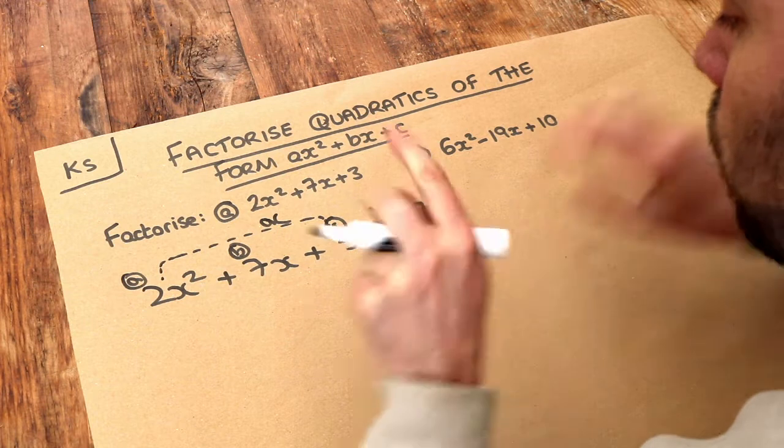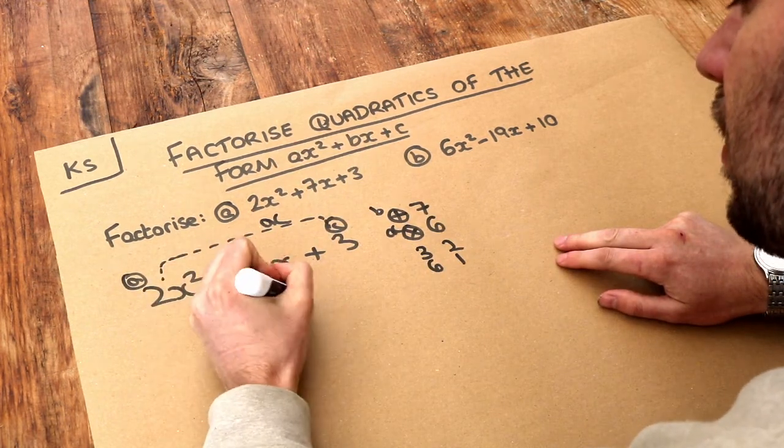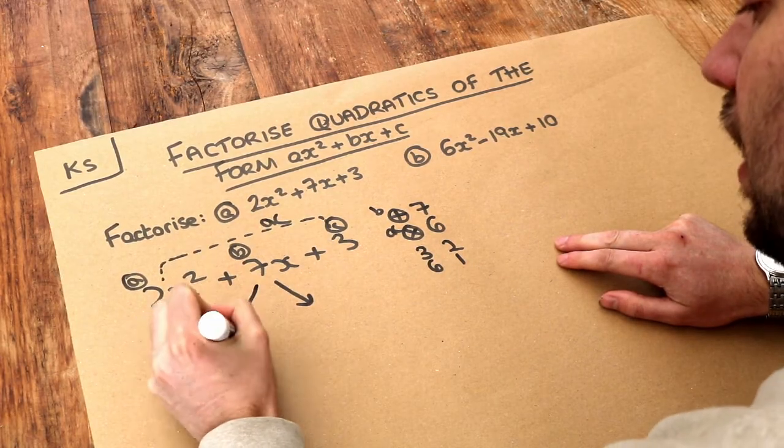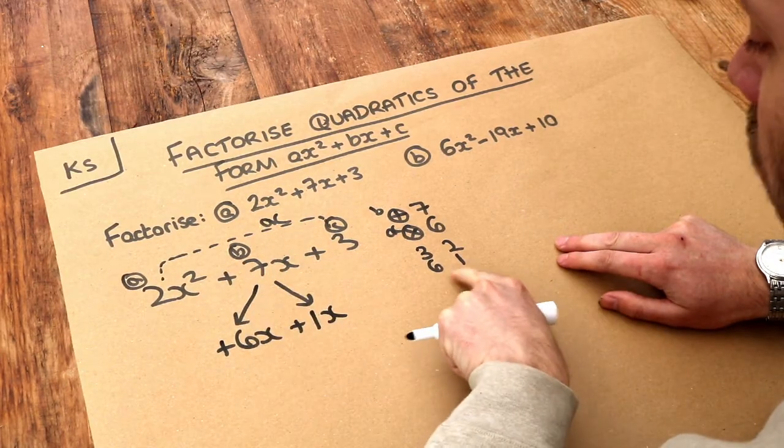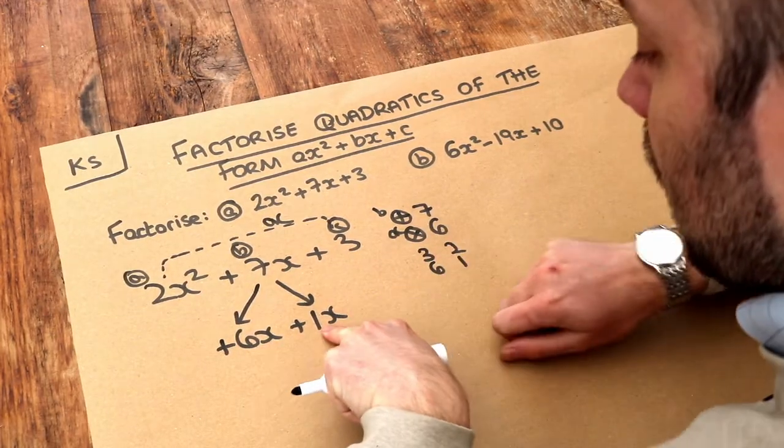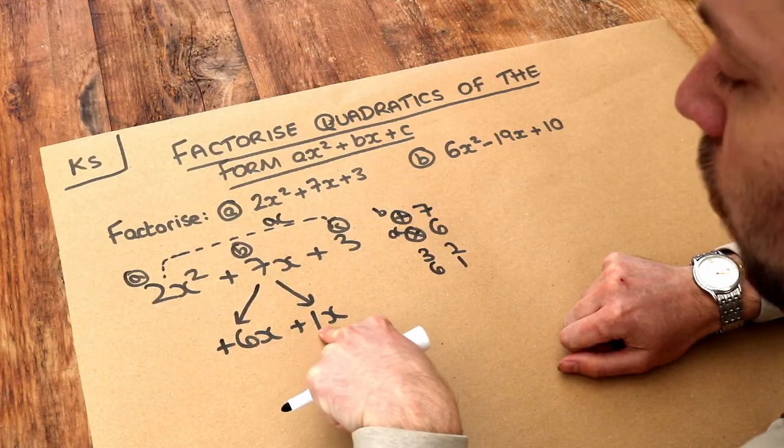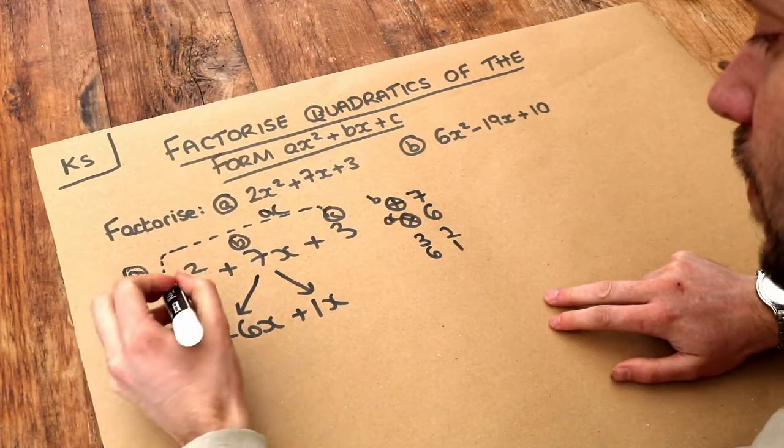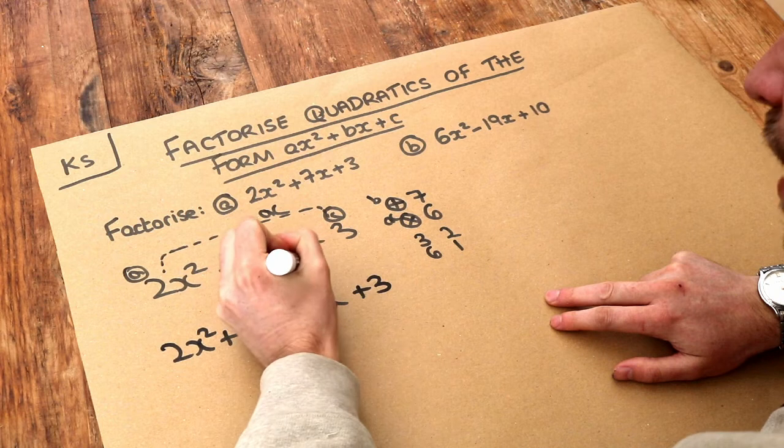So once we've got those two numbers of 6 and 1, what we do is we do something called splitting the middle term. So we split this 7x into those two numbers, the 6 and the 1. So 7x could be written as 6x plus 1x. Or it could be the other way around, 1 times 6 would also work, and then we can split the 7x into plus 1x and 6x. So obviously we still need to have the x on here, because if we just had plus 6 plus 1, that would be 7. It wouldn't be 7x, would it? And we've still got these other things here. So we've got the 2x squared, and we've got the 3. So this is called splitting the middle term.